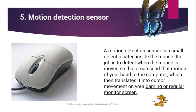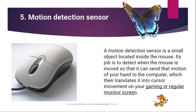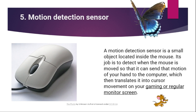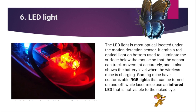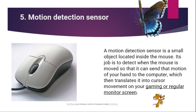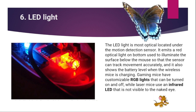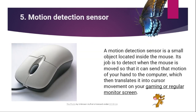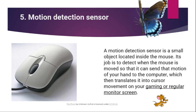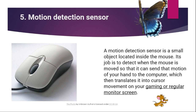Next, we have the motion detection sensor. The motion detection sensor is a small object located inside the mouse. Its job is to detect when the mouse is moved so that it can send that motion of your hand to the computer, which then translates it into cursor movement on your gaming or regular monitor screen. Sa loob meron siyang sensor — yung nga yung umiilaw sa ilalim. Meron parang bola sa ilalim. Para pag nagscroll kayo, nagmove nga din siya.